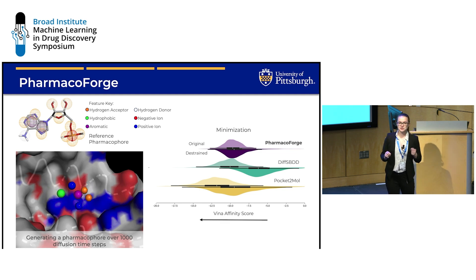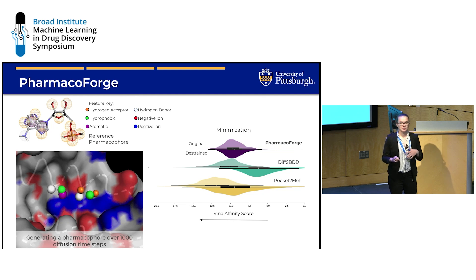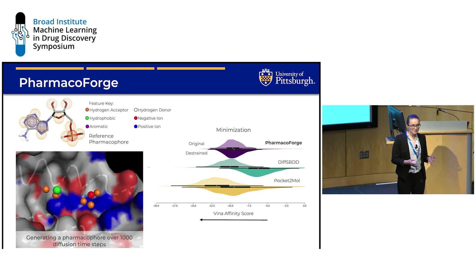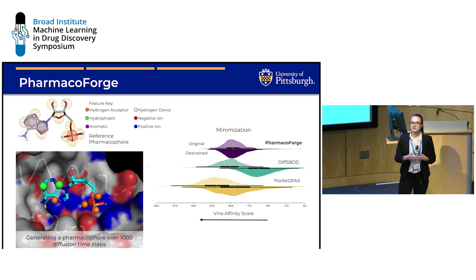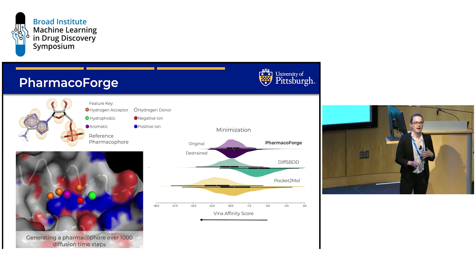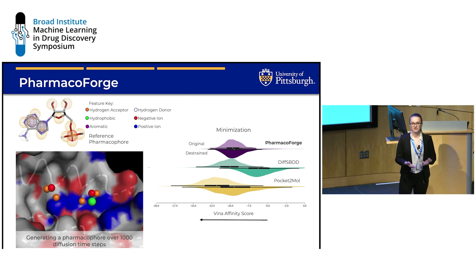The other category is de novo ligand generation. Recently, deep learning models have emerged that are capable of creating new ligands for a given protein pocket in just a matter of seconds. But the field has found issues with the validity of these molecules and their synthesizability, and finding a synthesis pathway — if one exists — is very time consuming.